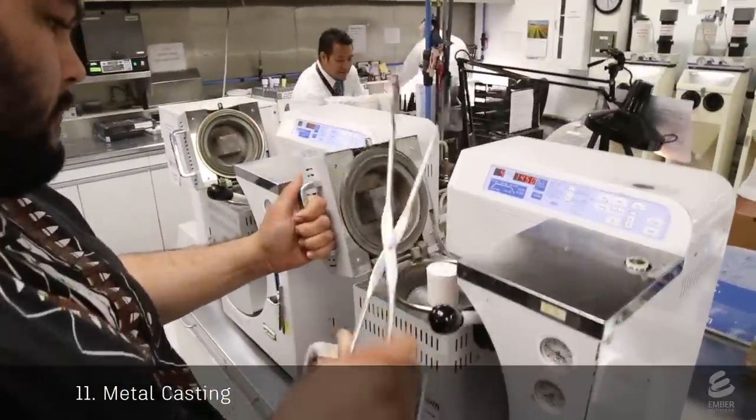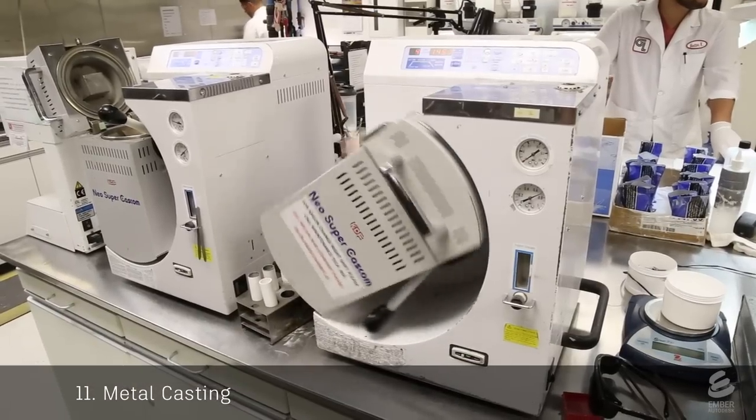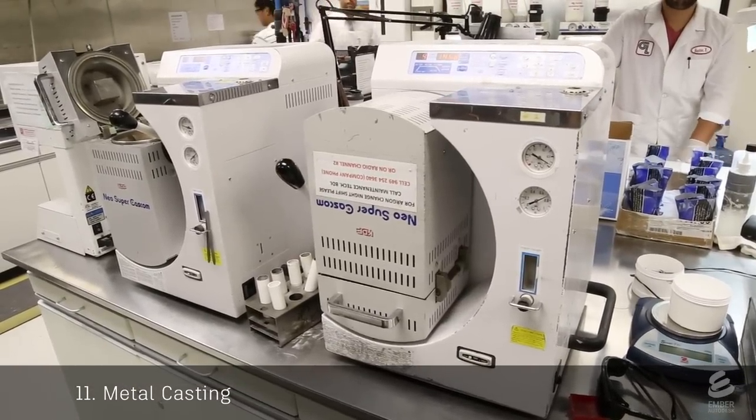Directly from the oven, the investment is inserted into a vacuum casting machine. Already inside is a precious metal alloy. The machine flips over and a vacuum pulls the molten metal into the void space.